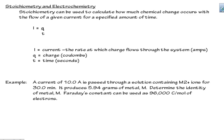As long as you know that this little equation can be used to calculate current, which is a measure of the rate at which charge flows through a system, we can use this to do some kinds of stoichiometry calculations. It says here that we can calculate how much chemical change occurs with the flow of a given current for a specified amount of time. So I is current, it's often measured in amps. Now they don't tell you that an amp is really just a coulomb per second.